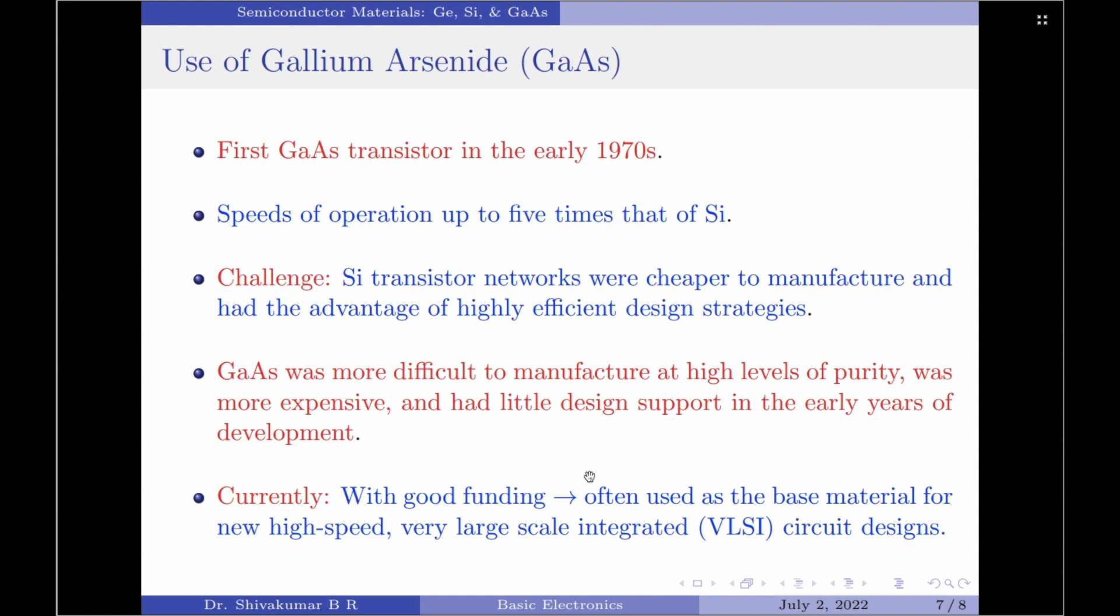On the other hand, gallium arsenide was more difficult to manufacture at high levels of purity, it was more expensive and had little design support in the early years of development.